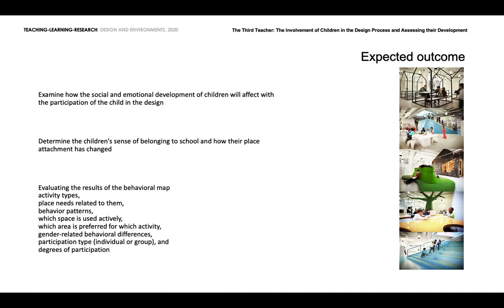This research is a part of an ongoing PhD thesis. This study refers to the theoretical background, research questions, and details of the case study's methodology. The aim of the thesis is to examine how the social and emotional development of children will be affected by participation in design. Accordingly, it is important to determine children's sense of belonging to school and how their place attachment has changed. By evaluating the results of the behavioral map, these subjects will be detailed further: activity types and place needs related to them, behavior patterns, which space is used actively, which area is preferred for which activity, gender-related behavioral differences, and participation types — individual or group — and degrees of participation.